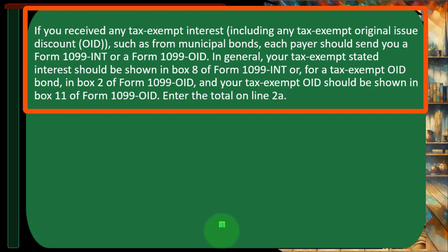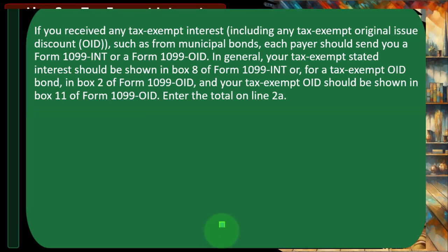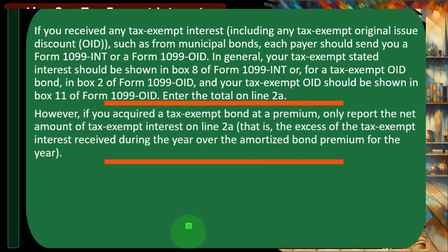Typically, data input software will have these boxes lined up nicely in the data input and can help you populate your returns. However, if you acquired a tax-exempt bond at a premium, only report the net amount of tax-exempt interest on line 2A — that is, the excess of tax-exempt interest received during the year over the amortized bond premium for the year. I'm not going to go into that in detail, but if you need to, you can look into it further.